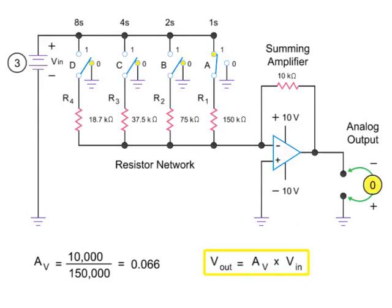Now the output voltage can be calculated by multiplying the gain by the input voltage of 3 volts. Thus, the product of the amplifier gain of 0.066 and 3 volts is 0.2 volts.